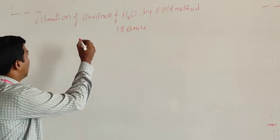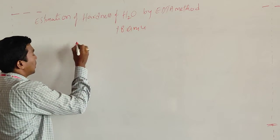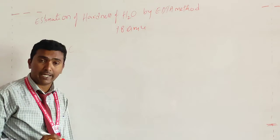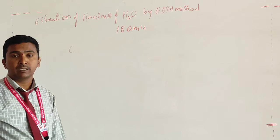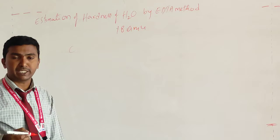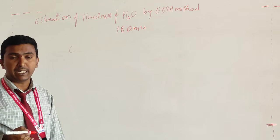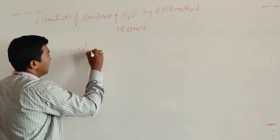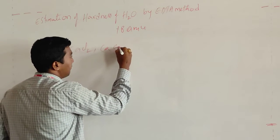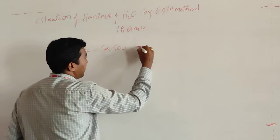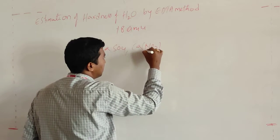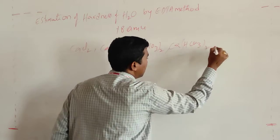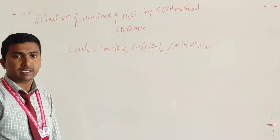The hardness-causing salts include chlorides, sulfates, and nitrates. The calcium-related salts are: calcium chloride, calcium sulfate, calcium nitrate, and calcium bicarbonate. These are the calcium-related hardness-causing salts.